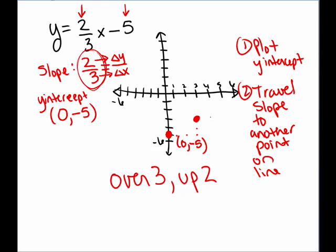I can then travel over another 3 and up another 2, and this is another point on the line. All the points in between on the same line are also there, so I can fill in the rest of the line. Here is a sketch of the graph of y equals 2/3 x minus 5.